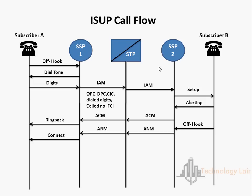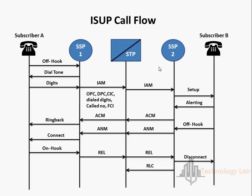The call is now connected and the conversation goes on. If the calling party hangs up first, the originating SSP sends an ISEP Release Message to release the trunk circuit between the two switches. When the destination switch receives the REL, it disconnects the idle trunk circuit and transmits an ISEP RLC, or Release Complete Message, to the originating switch to acknowledge the release of the remote end of the circuit. In this way the basic call flow of ISEP works.